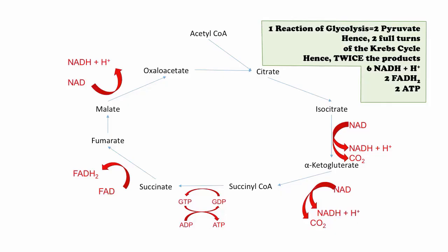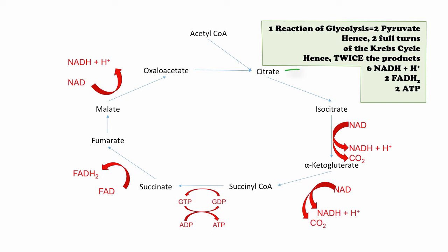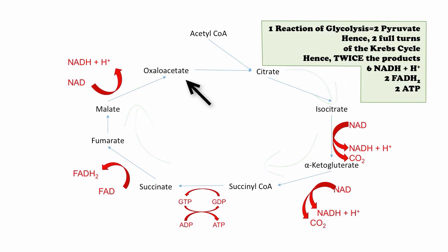In this video we will be covering the steps of the Krebs cycle. The Krebs cycle is a process that takes an oxaloacetate molecule and transforms it into citrate by adding acetyl-CoA. The process then takes citrate through many forms until it becomes oxaloacetate again, ready for another acetyl-CoA.